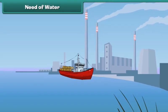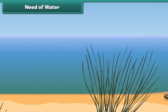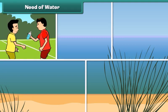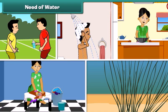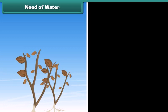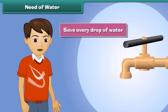We know air is very essential for our life, but did you ever wonder why water was so important? We need water to drink, to bathe, to cook, to wash our clothes, to water plants, and for so many other reasons. Without water, plants would die and people and animals would go thirsty. So children, save every drop of water and don't let it go to waste.